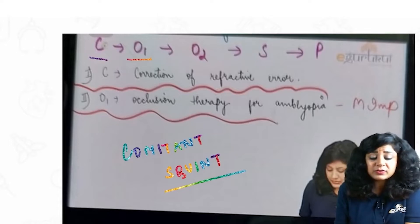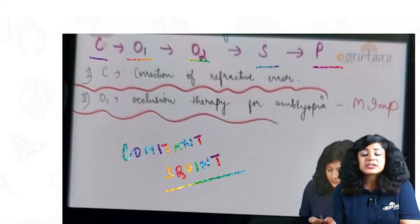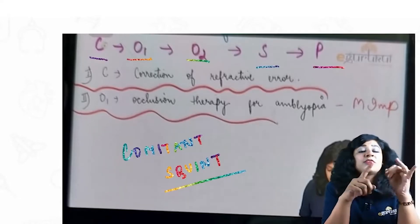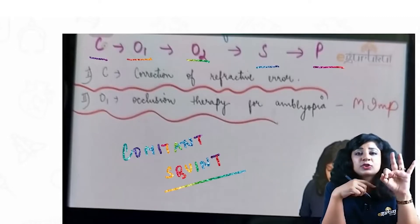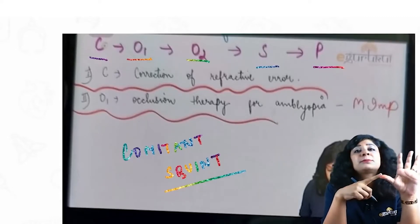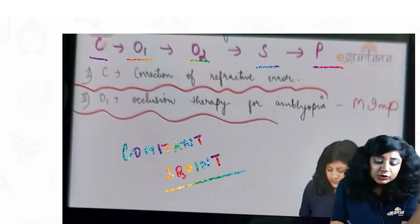This is C, then we have O1, O2, S, and P. So C is for correction of refractive error, O1 is occlusion therapy, O2 is orthoptic exercises, S for surgery, and P for prism for the remaining correction.